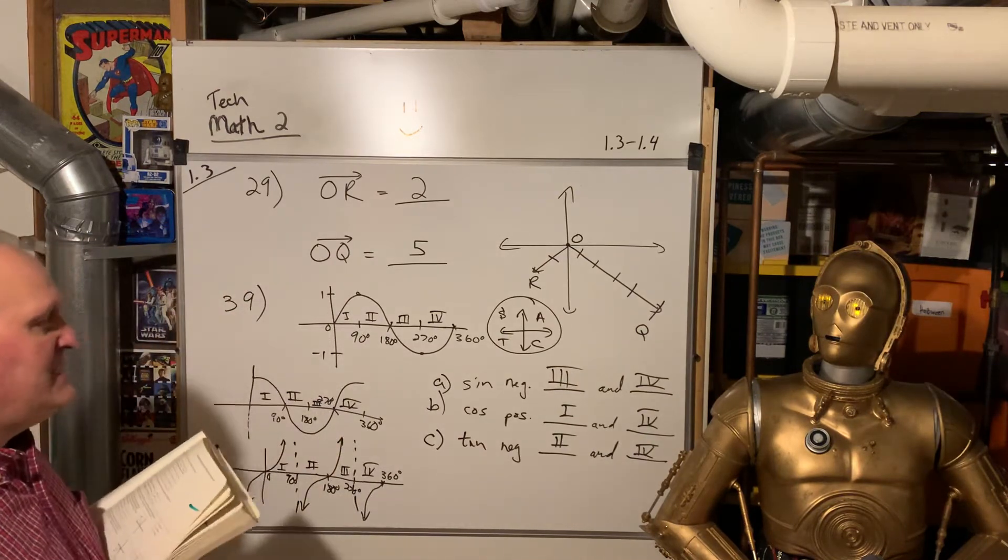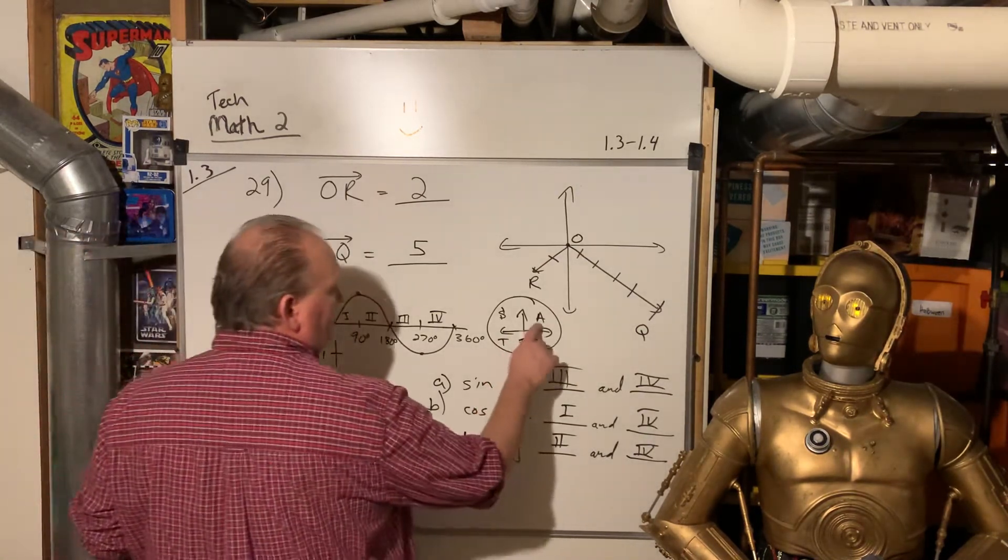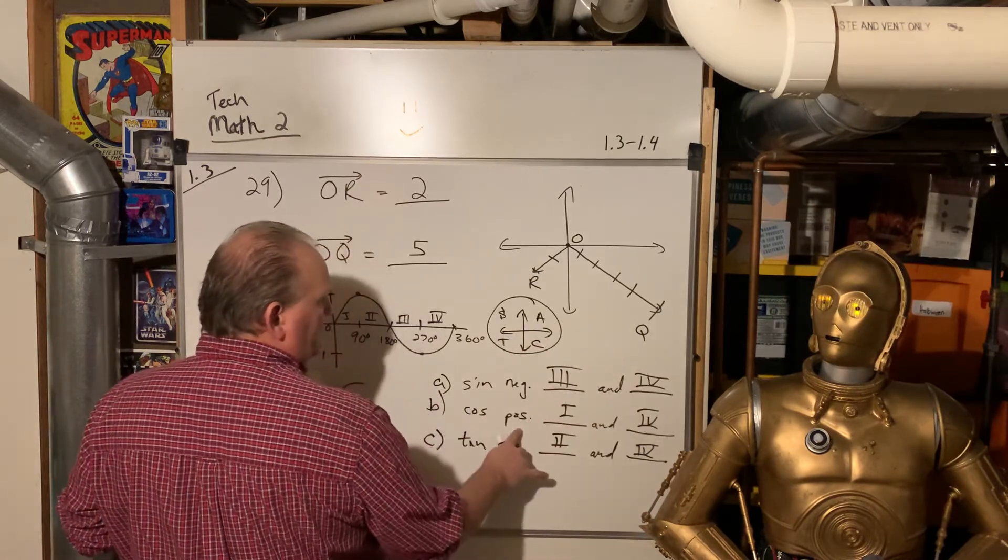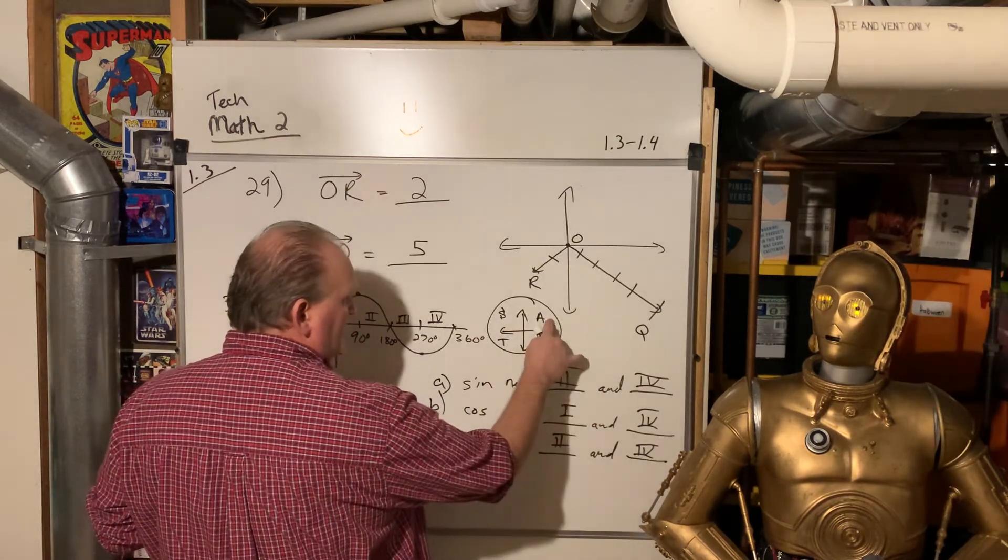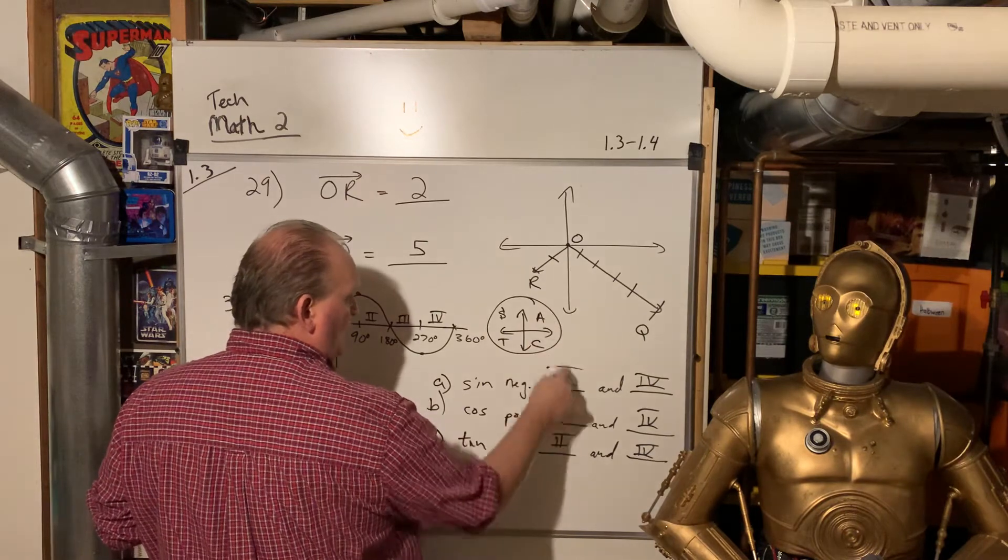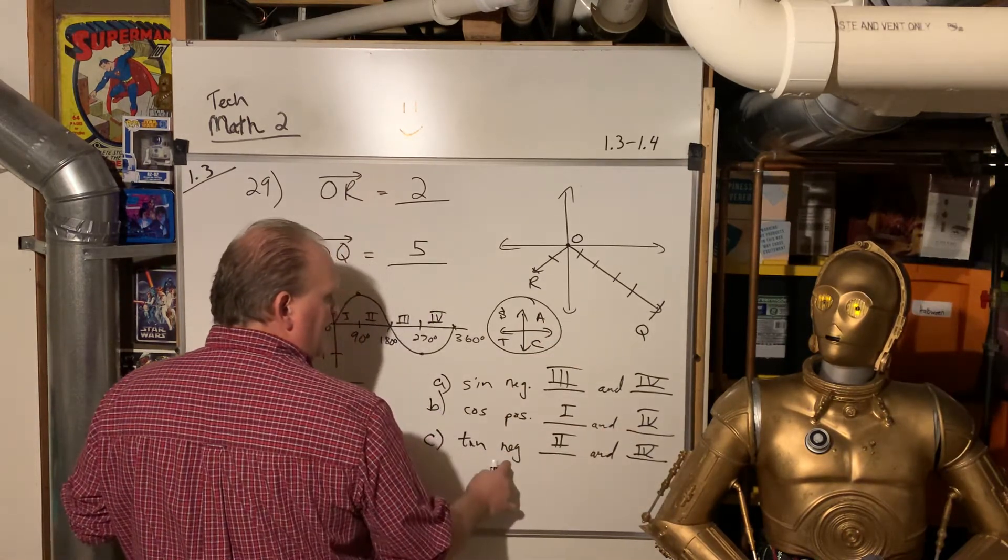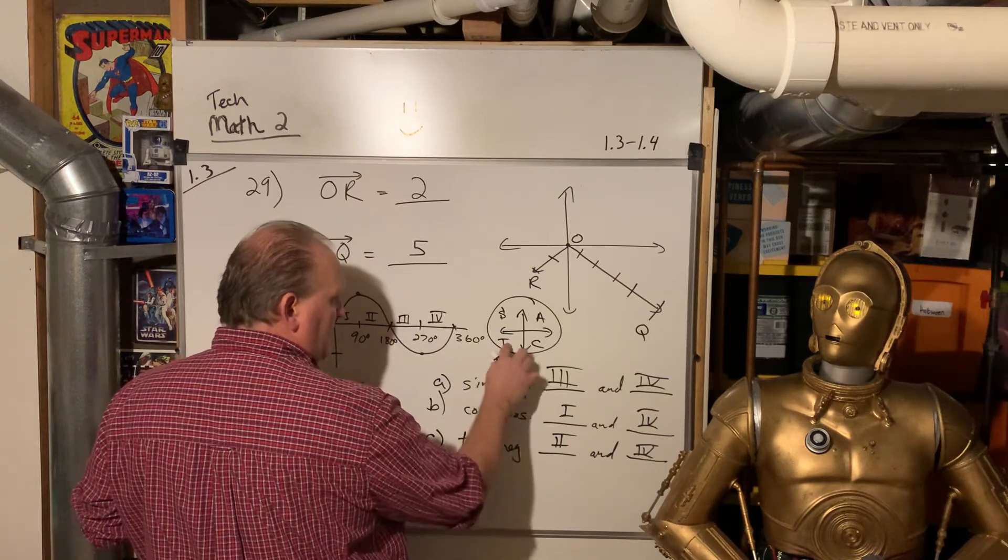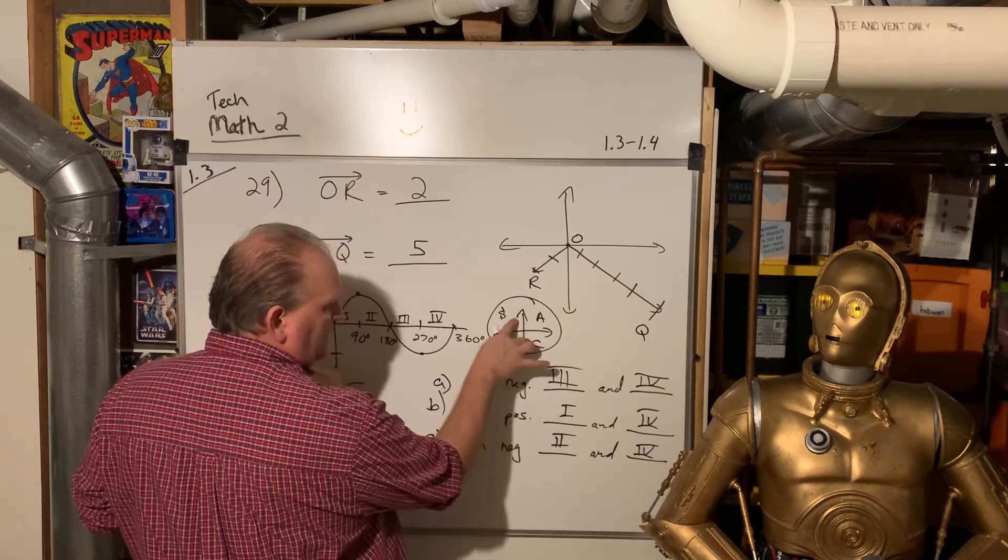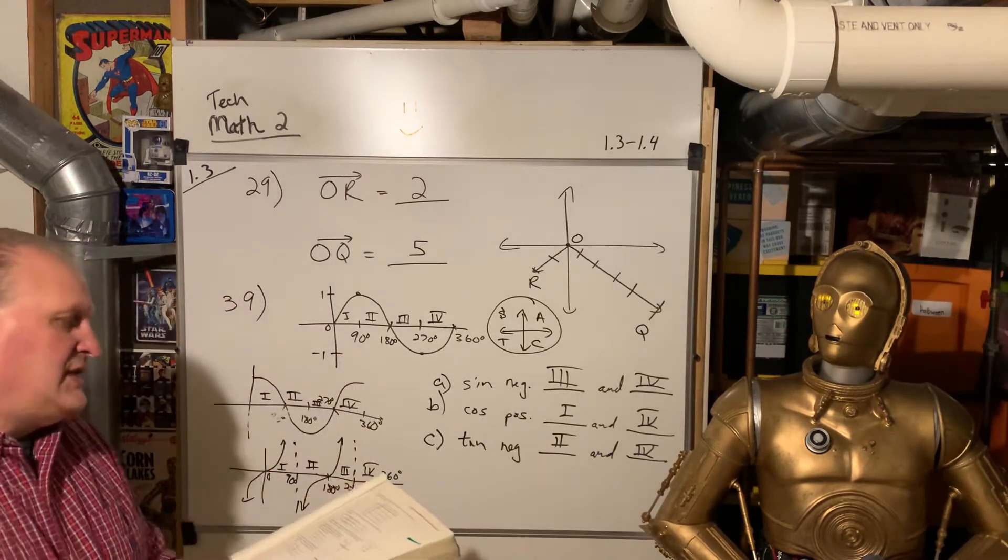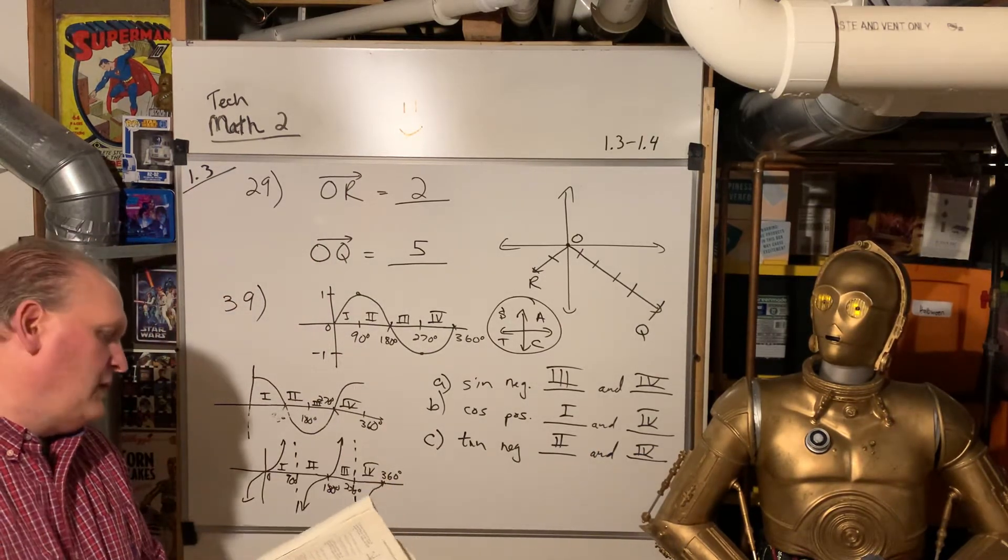So when they say, where is the sine negative? Well, you know it's positive in the first and second. So it's negative in the third and fourth. Cosine positive. Well, we know they're all positive in the first. So that was the one, and cosine is positive in the fourth. Tangent negative. Well, if it's positive here and here, it's negative here and here. Two and four. So that's just a different way to memorize it.